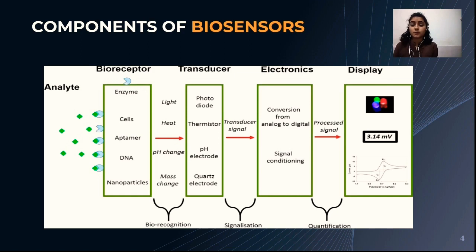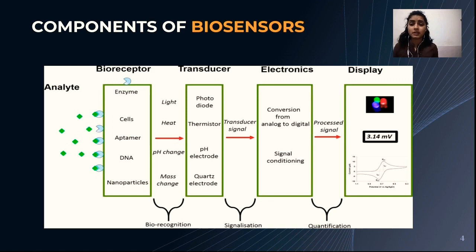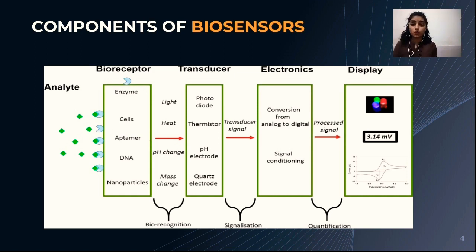Biosensors generally have five components, as you can see from this diagram: analyte, bioreceptor, transducer, electronics, and display. The analyte is the substance that needs detection. For example, glucose is an analyte in a biosensor designed to detect glucose.